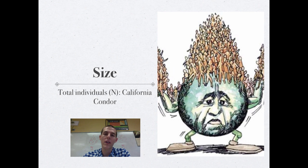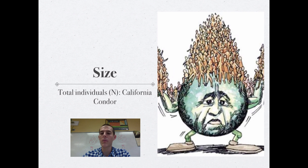The first characteristic is size. When talking about populations, size is denoted by the letter N. The total number of individuals living in an area is denoted as a capital N.